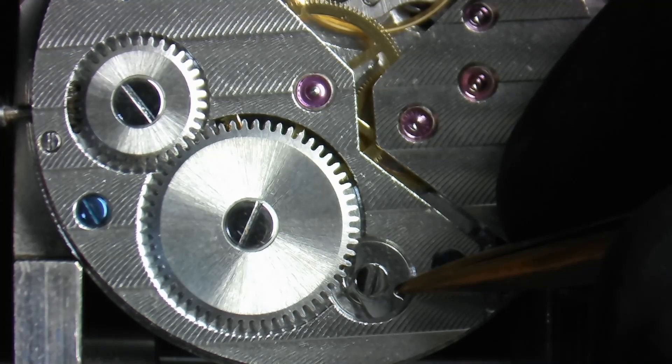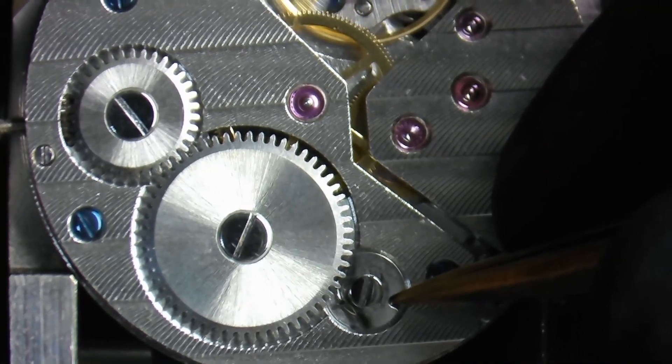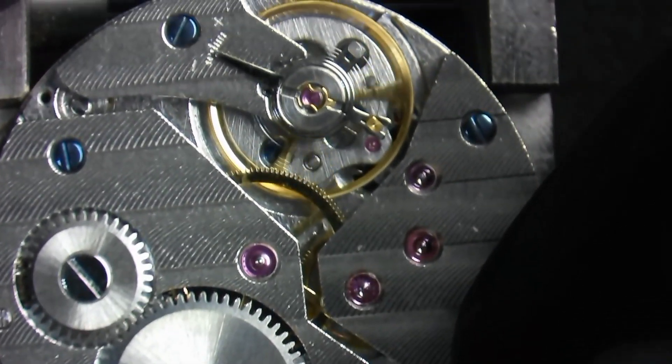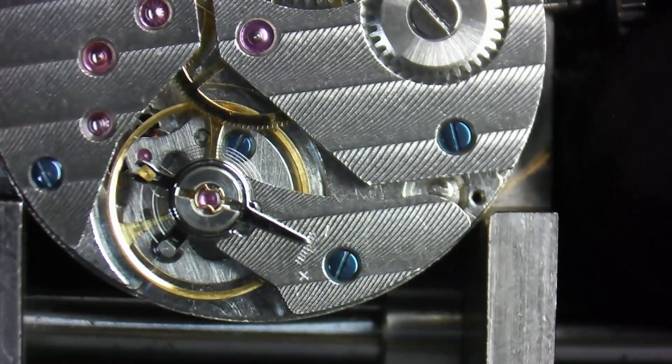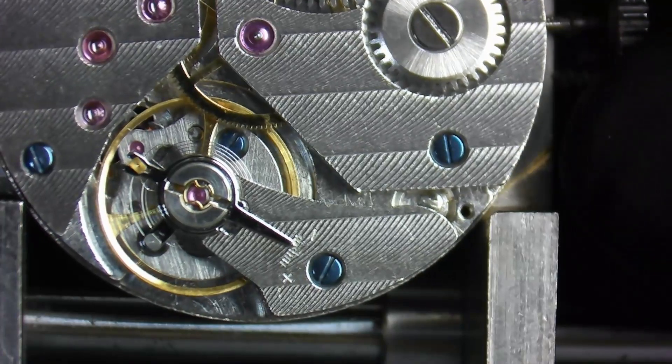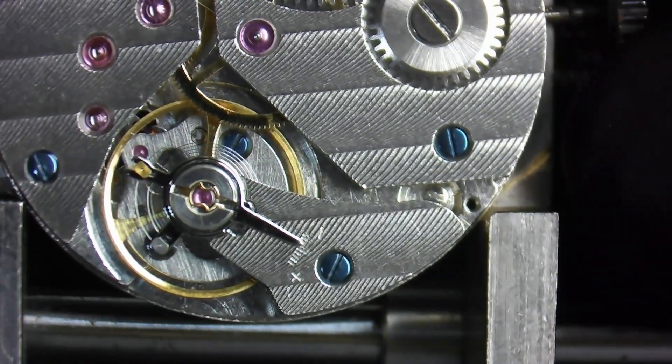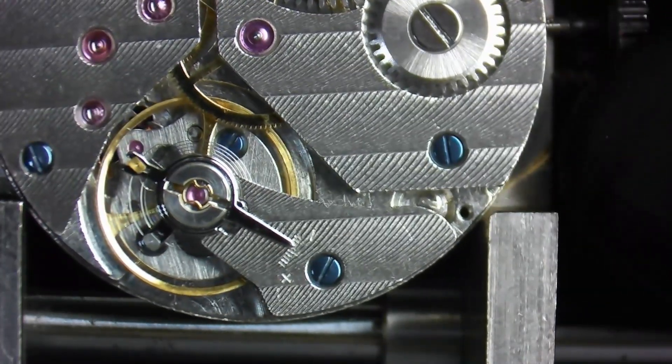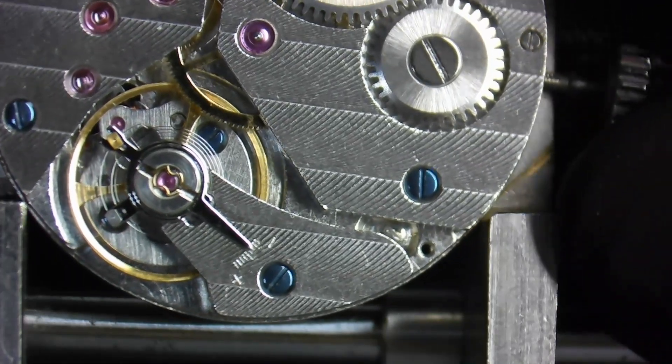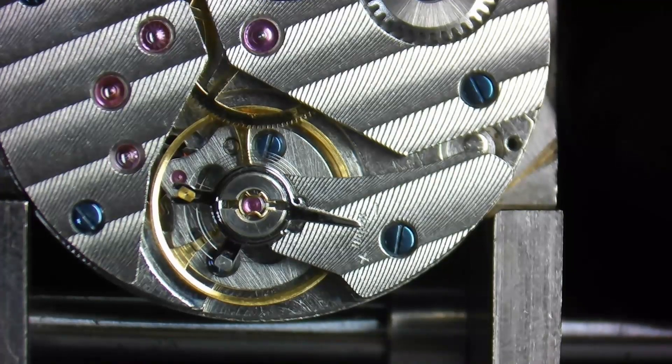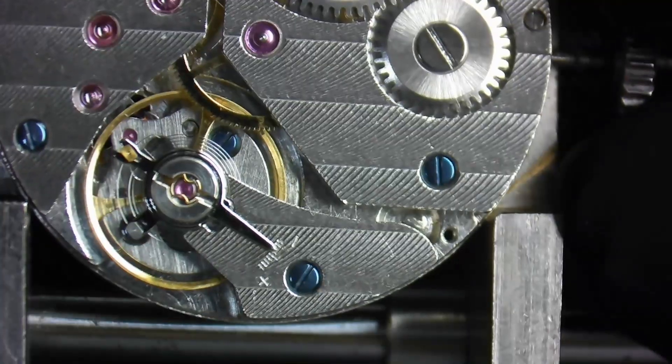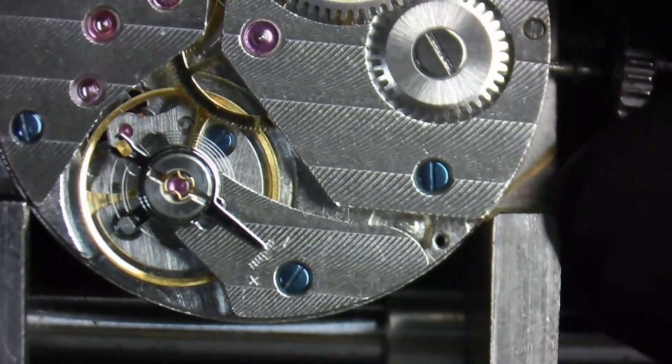When all the power is out of the mainspring, the balance wheel will stop. Start off by making sure that the movement is mounted into the movement holder so that the balance cock is in a place where you'll have an unobstructed access to the point where you're going to be picking it up. Some position in this area would be the best.